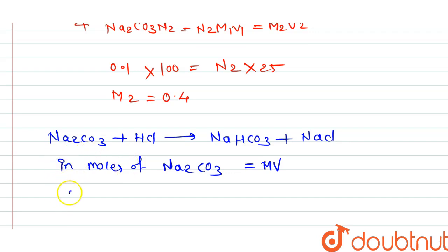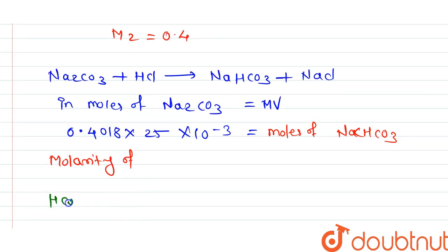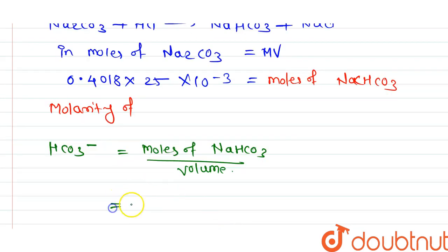Let's check in moles of Na2CO3, that means 0.4018 into 25 into 10 raised to minus 3. The moles of Na2CO3 is equal to moles of NaHCO3. How can molarity be found out? This is HCO3 minus, the moles of NaHCO3 upon volume. Then put up the moles of Na2CO3 is equal to 0.4 into 25 into 10 raised to minus 3 into 1000 upon 125.